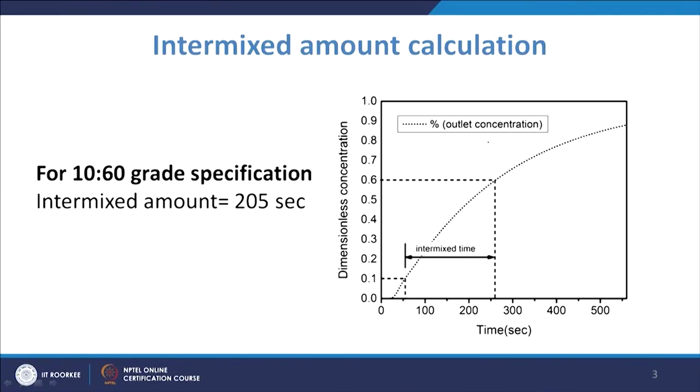The whole liquid concentration of old steel will be stopped and replaced only by the new tracer steel. It will go into the tundish and its concentration will increase continuously because only the new grade steel is entering the tundish. After some time it will start appearing at the outlet, slowly increasing, and at some point the concentration reaches close to 1, meaning 100% new grade.